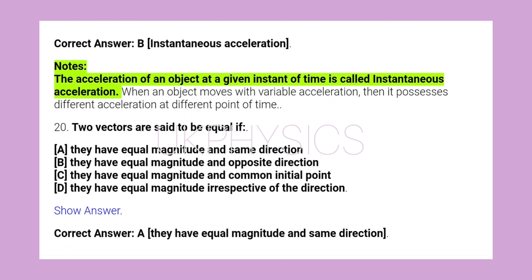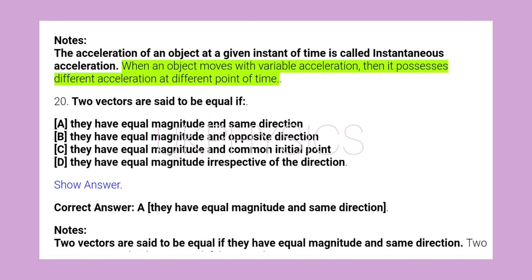Notes: The acceleration of an object at a given instant of time is called instantaneous acceleration. When an object moves with variable acceleration, then it possesses different acceleration at different point of time.